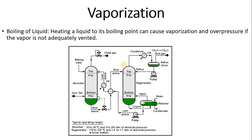Vaporization — essentially boiling — is another cause. Heating a liquid to its boiling point can cause vaporization and over-pressurization if the vapor is not adequately vented. If the system pressure drops below the vapor pressure at that temperature and boiling occurs, vaporization will happen and system pressure could increase. For any xyz reason that causes boiling, your system pressure is going to increase.